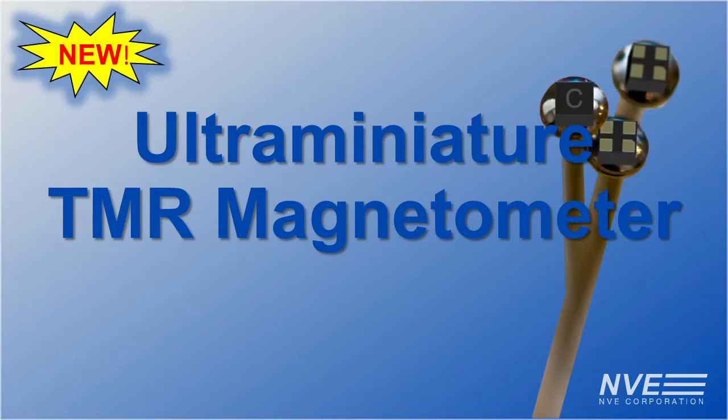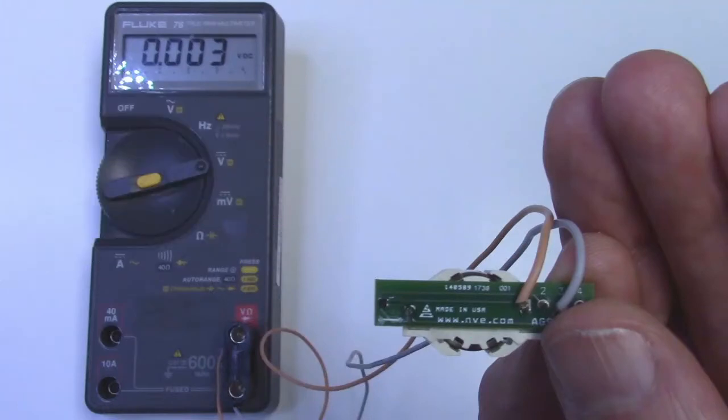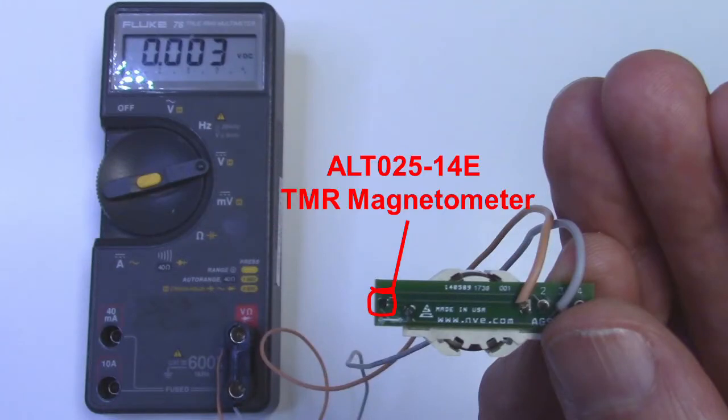Today we're demonstrating a modern take on old-school magnetic bridge sensors, TMR analog magnetometers. They're ridiculously simple to use as we'll see, and the version we're previewing is small enough to fit on the head of a pin.